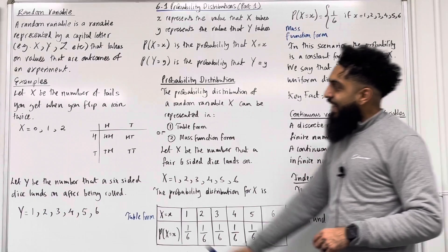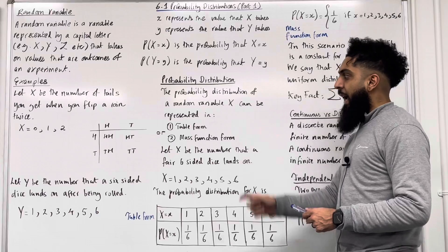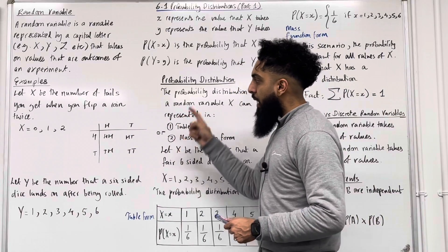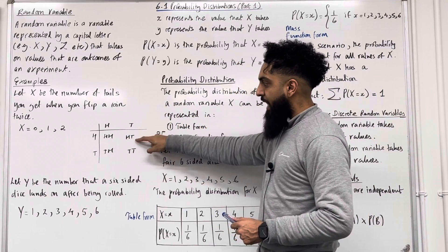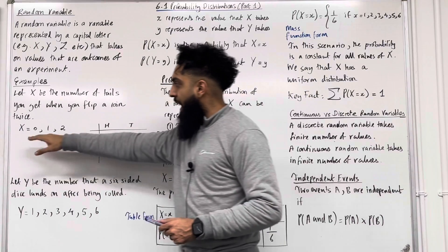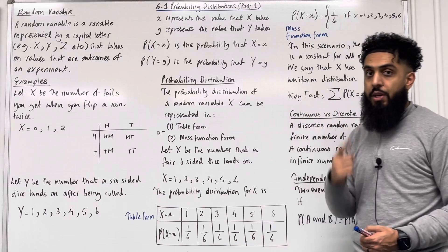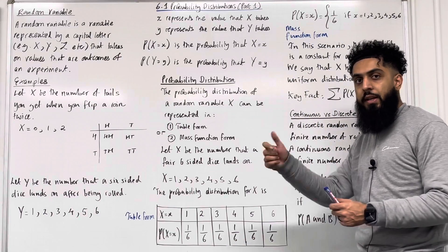Let's go through some examples. Let capital X be the number of tails you get when you flip a coin twice. Here is the sample space diagram. You could get 2 heads, 1 head 1 tail, 1 tail 1 head, or 2 tails. Capital X takes on the values 0, 1, or 2. You could get 0 tails, 1 tail, or 2 tails when you flip a coin twice.